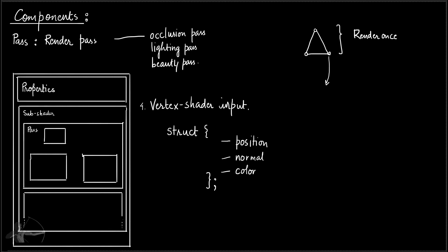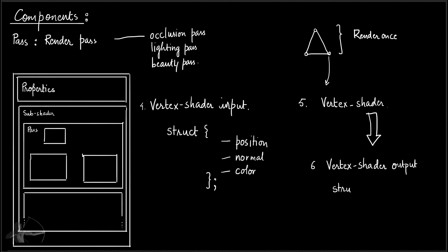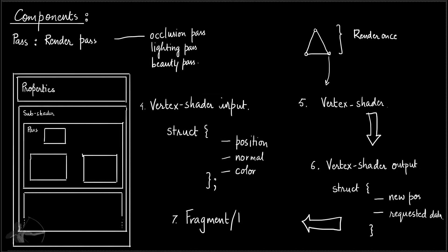Vertex shader input is the fourth component. The fifth component is the vertex shader, which processes the vertices and outputs a packet of processed information called vertex shader output, also in the form of a struct. This output contains new positions plus any requested data. This packet then goes to the last component — the fragment or pixel shader — which gives us the color and alpha of the pixel. So those are the seven components.